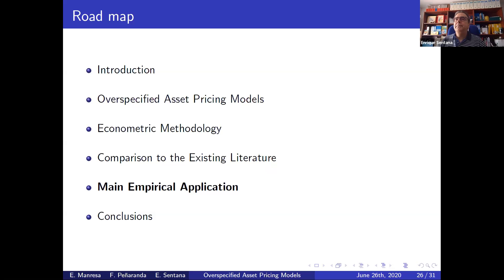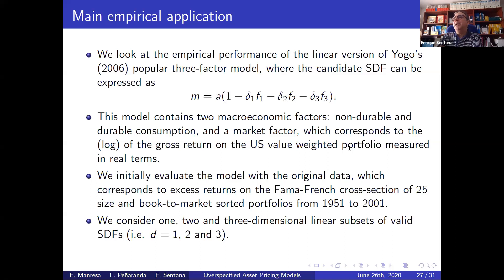I'm going to rush through the empirical application to keep within time. The main empirical application uses the linear version of Yogo's three-factor model, in which the stochastic discount factor contains two macro factors: non-durable consumption growth and durable consumption growth, plus a market factor which is the gross return on the US value-weighted portfolio. We replicated his results using the Fama-French 25 size and book-to-market portfolios, quarterly real terms from 1951 to 2001, considering cases where the set of admissible stochastic discount factors could be one, two, or three dimensions.